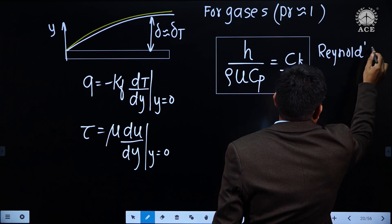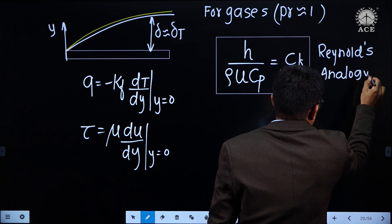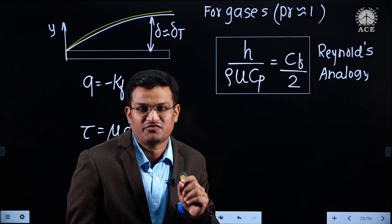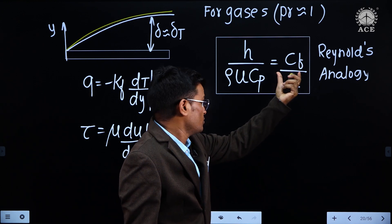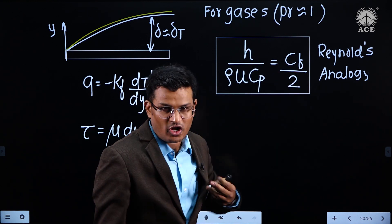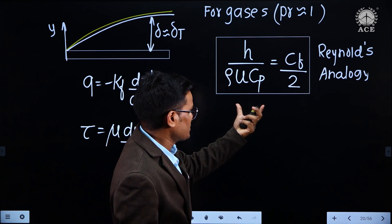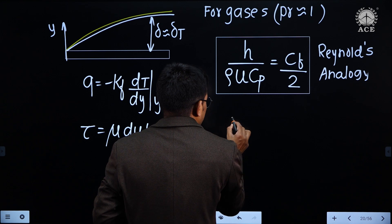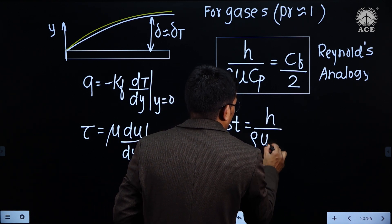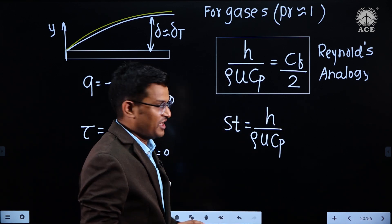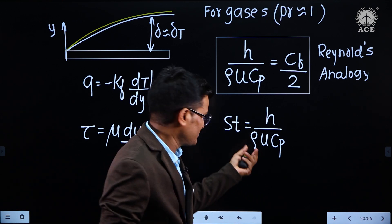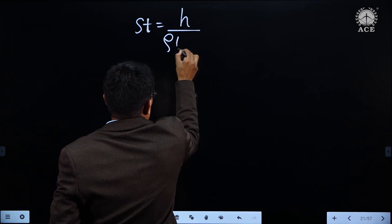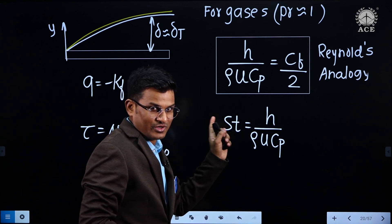This expression is called Reynolds analogy. Here Cf is the skin friction coefficient. If you have the skin friction coefficient value, you can relate it to the h value. Already you know that in convection, determining h is difficult — but this expression says if you have Cf, you can determine h. Now, the Stanton number is equal to h / (rho × u × Cp), and it has a physical meaning as well.